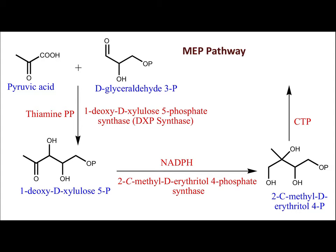The difference between DXP and MEP: DXP is a five-carbon xylulose sugar, while MEP contains erythritol, a four-carbon sugar. In MEP there is a methyl substitution at position two (2C-methyl) and a phosphate at position four. In DXP, the phosphate substitution is at position five. Erythritol does not contain a ketone group, whereas xylulose does.